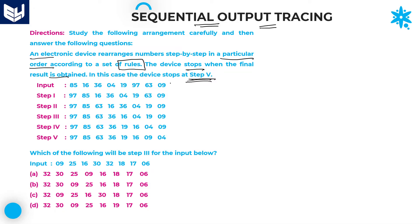Step 5 is the final step for this question. This is the input provided, and based on the input, the device gives step 1, step 2, step 3, step 4, step 5 — step by step. There is a particular rule we have to identify: in what way is the logic being applied? Based on that particular logic, you need to solve the remaining questions in the set.